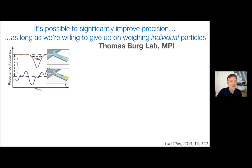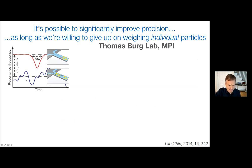For those familiar with fluorescence correlation spectroscopy, you might recognize this idea. A heavy particle that comes through gives a clear signal. Tomas has particles too small to weigh individually, but there are many of them in the channel, so all their masses add up to contribute to a signal. The signal looks noisy because of all these particles flowing through at different times and speeds. Tomas showed that you can actually directly calculate from this noisy signal what the average mass of the particles in the channel is.